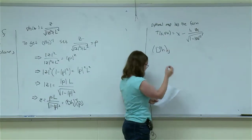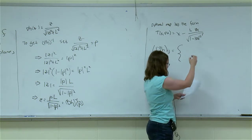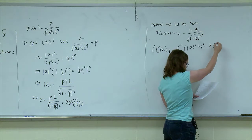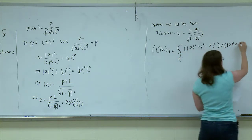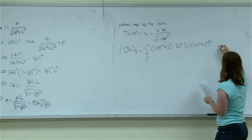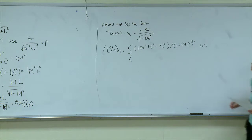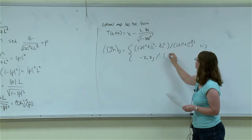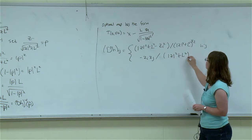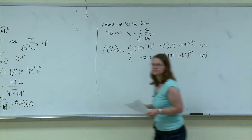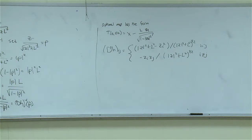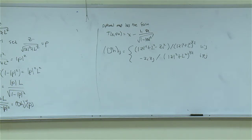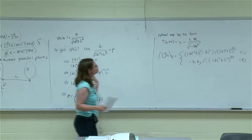The Hessian of h — its ij component is going to be equal to: z squared plus L squared minus z_i squared, over z squared plus L squared to the 3 halves, if i equals j; or minus z_i z_j divided by z squared plus L squared to the 3 halves, if i is not equal to j. So these are the elements of my Hessian.